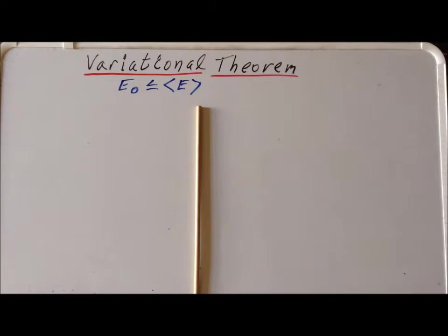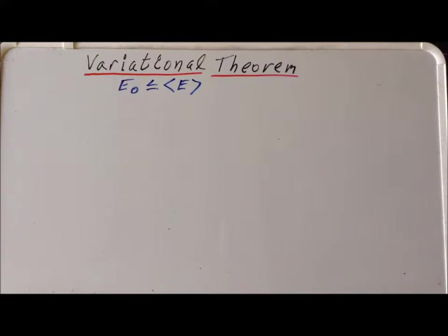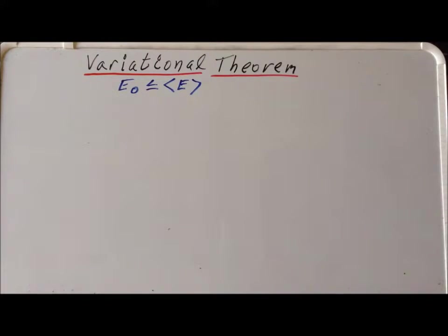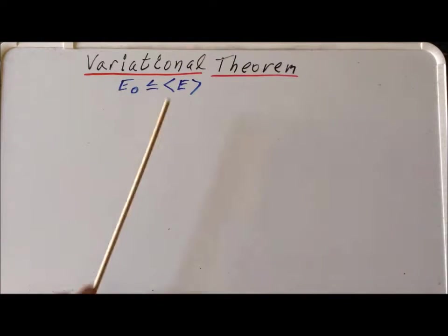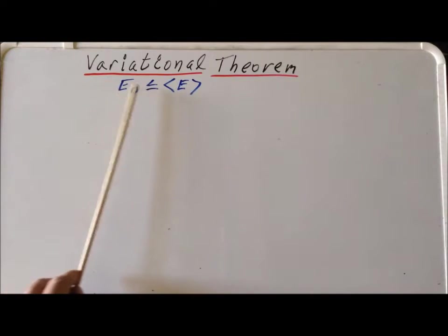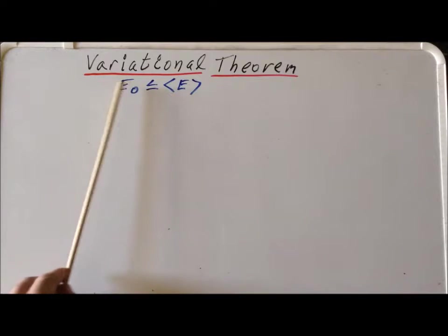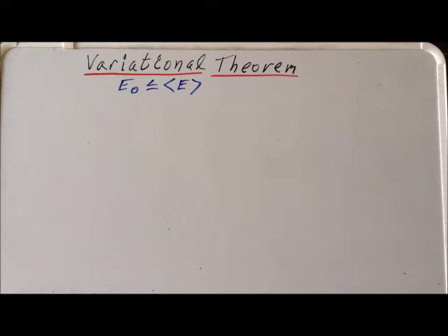Hello. In this video, we are going to demonstrate a proof of the variational theorem in a specific case. And in the next video, we are going to give a general proof for the variational theorem. In short, the variational theorem tells us that if we know what the true ground state energy is of a particular system, and if we try to form some function and take its expectation value, that expectation value will at best equal the ground state energy or it will be greater than it. So this expectation value of the energy will be greater than or equal to the true ground state energy.